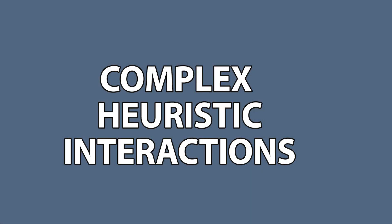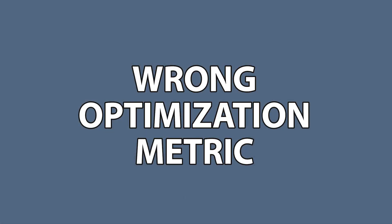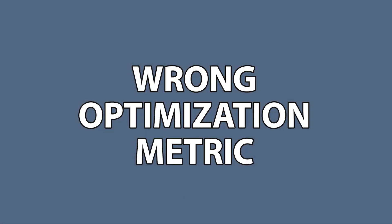You heavily bias your algorithm and measure to match that understanding, prioritizing the wrong cases. Third, complex heuristic interaction — you apply a series of heuristics which may be individually correct, but they're collectively wrong. And finally, an honorable mention: wrong optimization metric. Whether your system is right or wrong, you're measuring impact the wrong way. Implementing a simple random algorithm can provide a baseline to identify poor system behavior in these four cases.